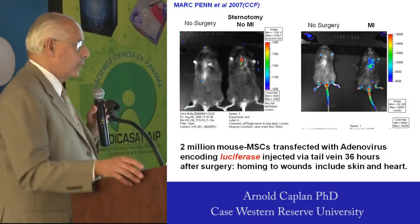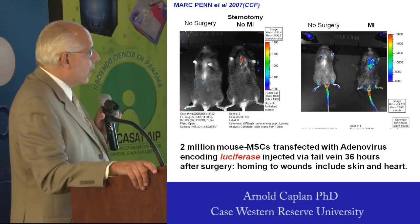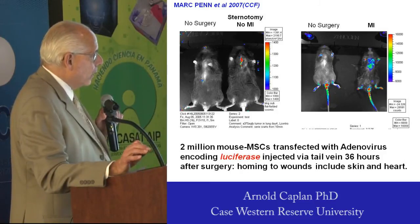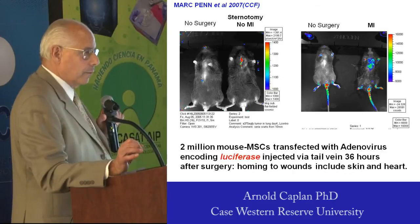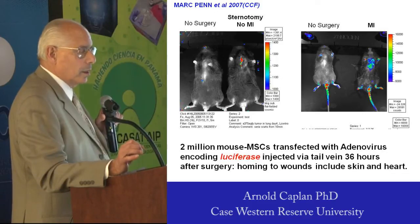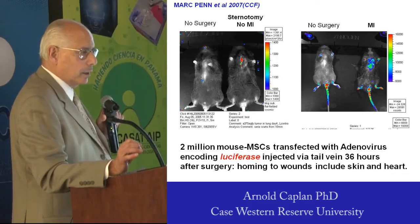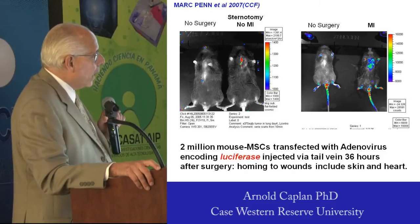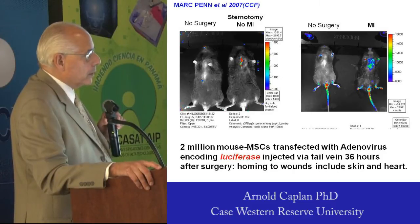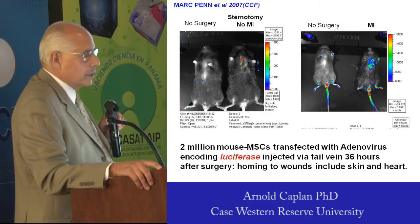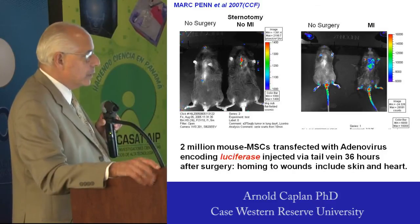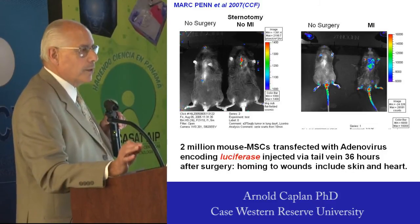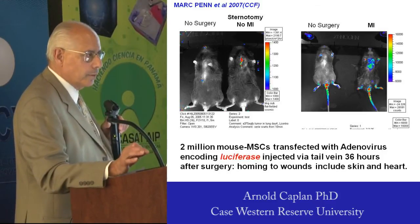This is a brilliant experiment done by a colleague of mine, Mark Penn. On the right-hand panel, Mark took a mouse, gave the mouse acute myocardial infarct, and an hour later he injected MSCs labeled with luciferase. You can see in the tail vein that they specifically go to the heart — they go to sites of injury.